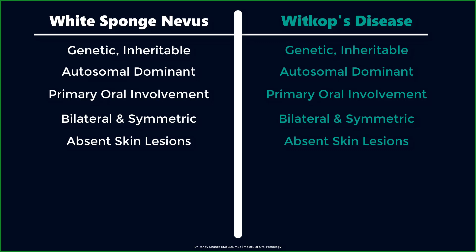Follicular keratosis is a disorder which is also autosomal dominantly inherited, but unlike Witkop's disease and white sponge nevus, it is primarily characterized by cutaneous lesions. Lesions in both conditions appear either at birth or in early childhood, with most cases being diagnosed before 20 years of age.